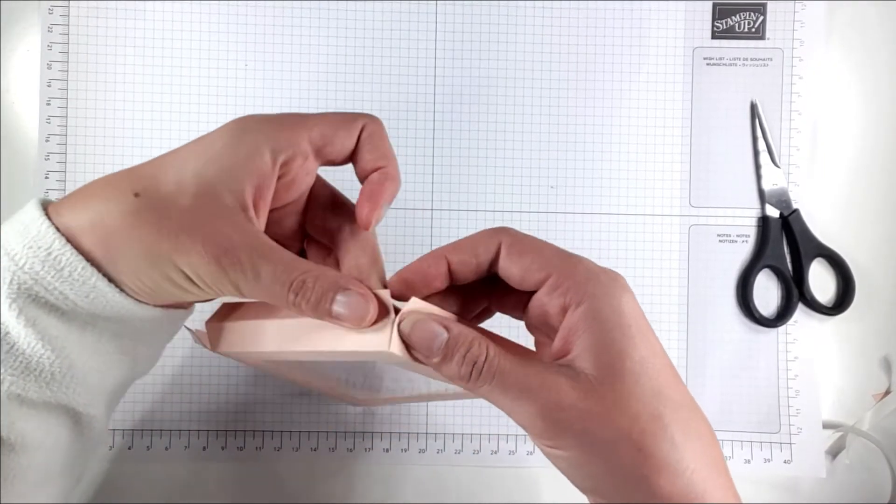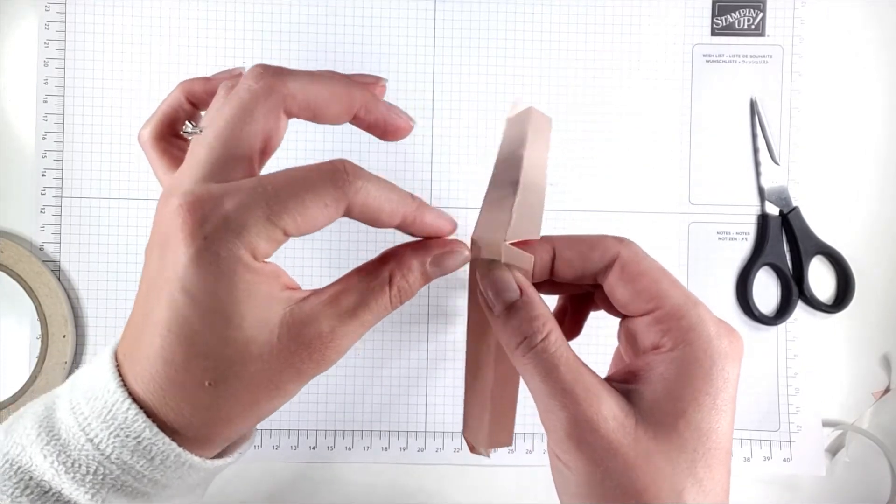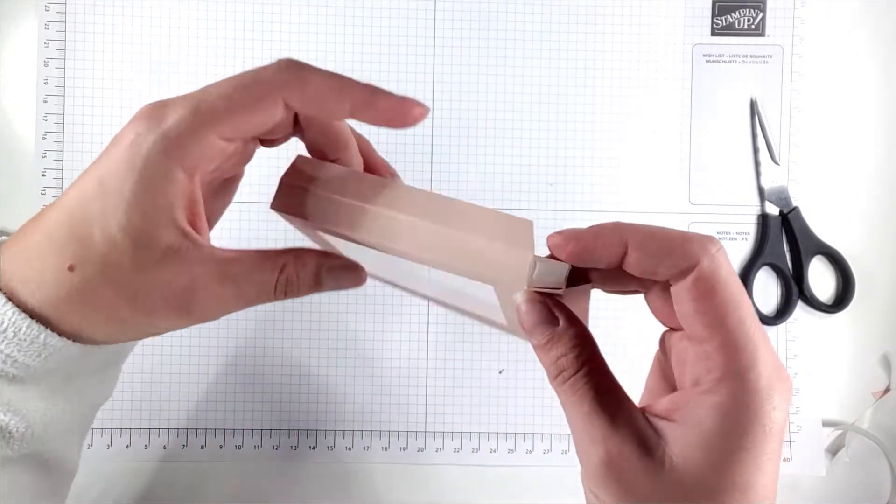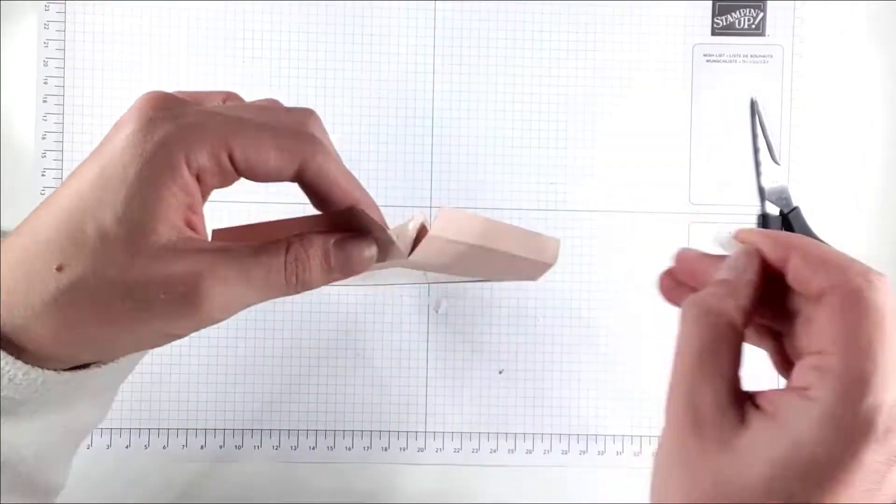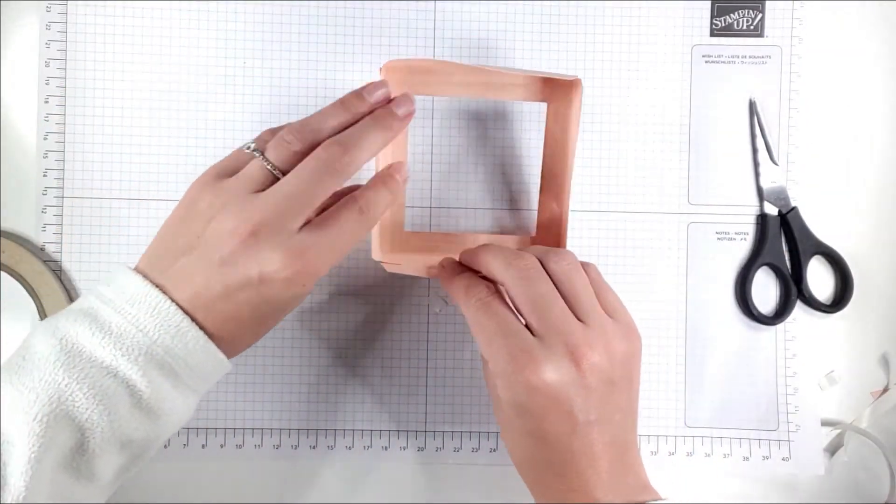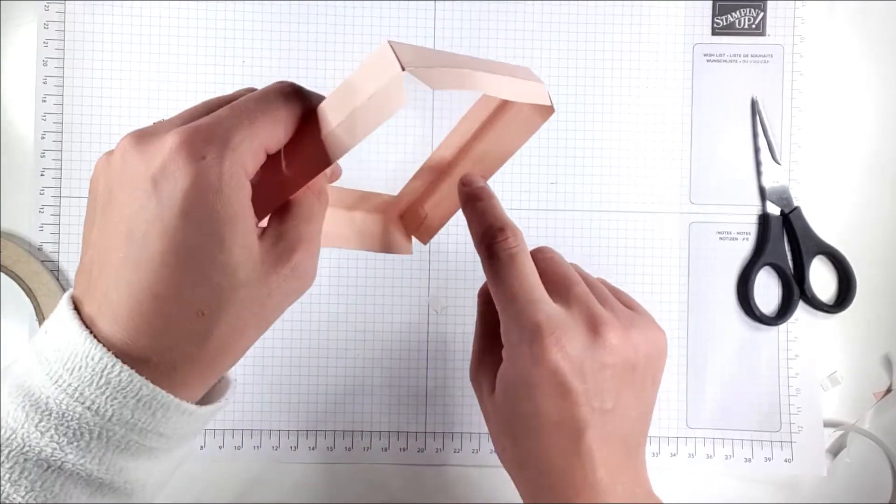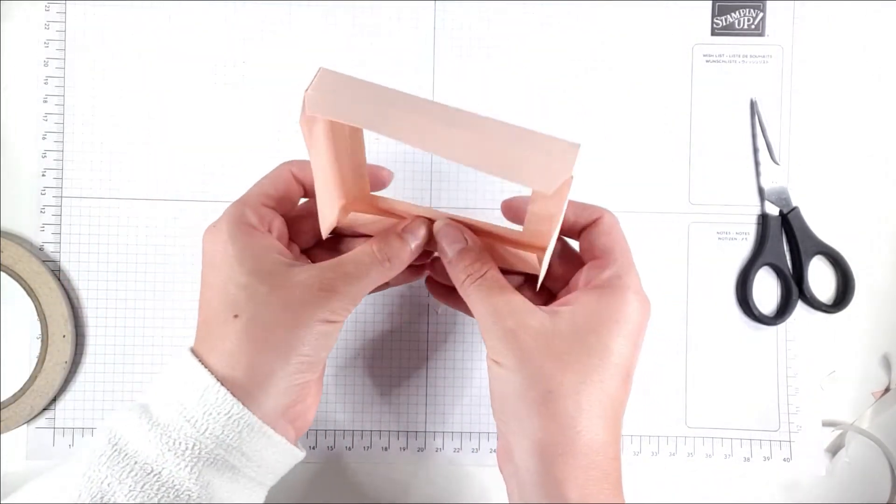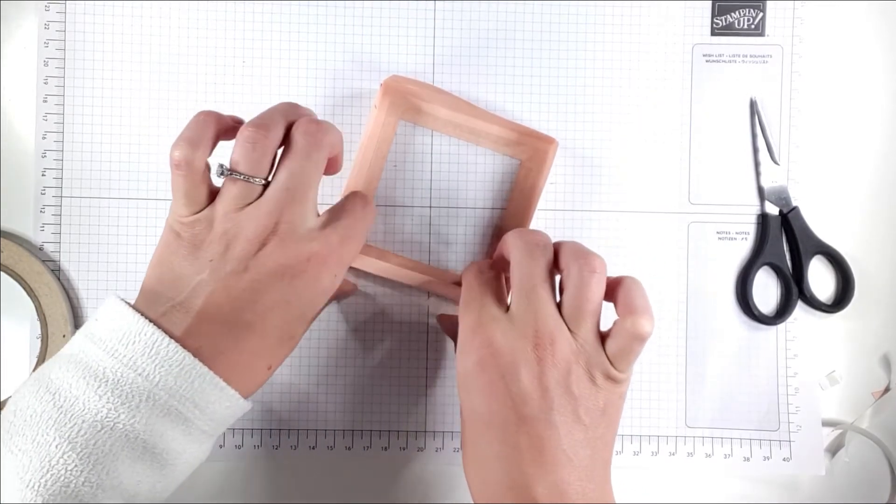Then I'm just going to fold that so that the score fold butts up against the edge of the box. Then I'm going to put more tear and tape on the inside of all of these flaps, then I'm just going to fold them over and that will reinforce the lid of the box, just make it a bit stronger.